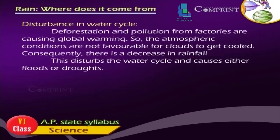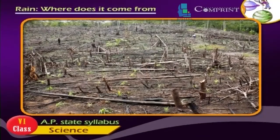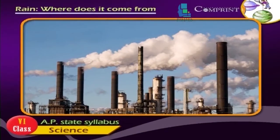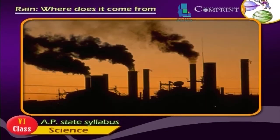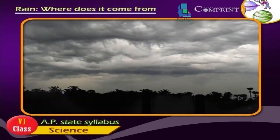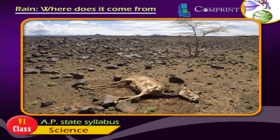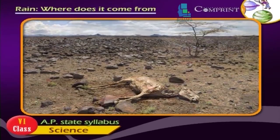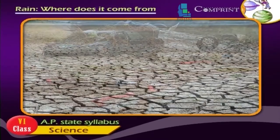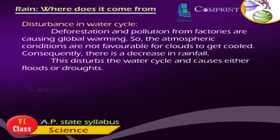Disturbance in water cycle: Deforestation and pollution from factories are causing global warming, so atmospheric conditions are not favourable for clouds to cool. Consequently, there is a decrease in rainfall, which disturbs the water cycle and causes either floods or droughts.